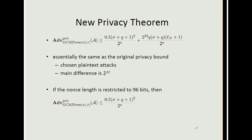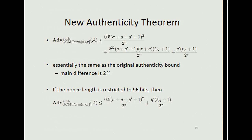We use this result to obtain a new privacy theorem, which is essentially the same as the original privacy bound, but dealing with chosen plaintext attacks instead of chosen ciphertext attacks. The main difference is that we now have the factor 2^22. We also show that if the nonce length is restricted to 96 bits, GCM has a stronger security bound. Our new authenticity theorem is again essentially the same as the original, with the main difference being this new constant, and again with a stronger bound when the nonce length is restricted to 96 bits.